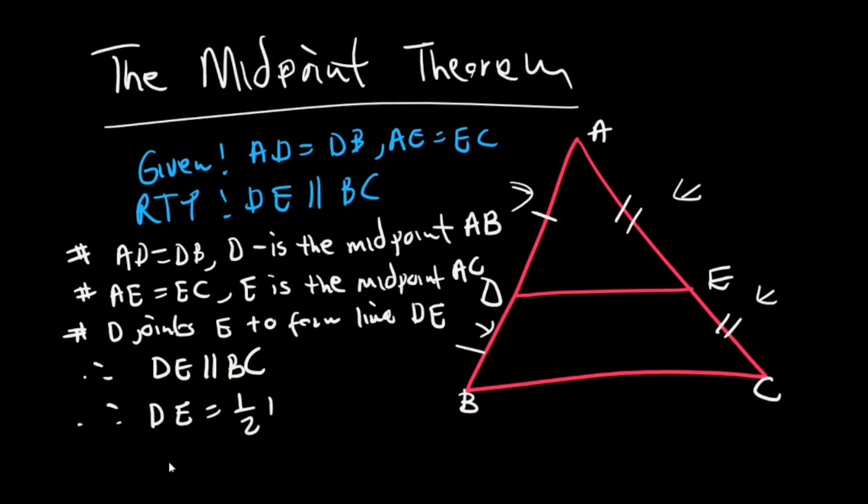half BC, or you can do the vice versa of that, which you say BC is actually twice DE. Right, so that's how we prove that the line DE is parallel to BC.